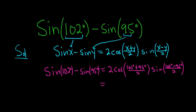So this is equal to 2 cosine. 102 plus 95 is 197, so you have 197 all over 2. Then we have sine, 102 minus 95 is 7, so you get 7 over 2.